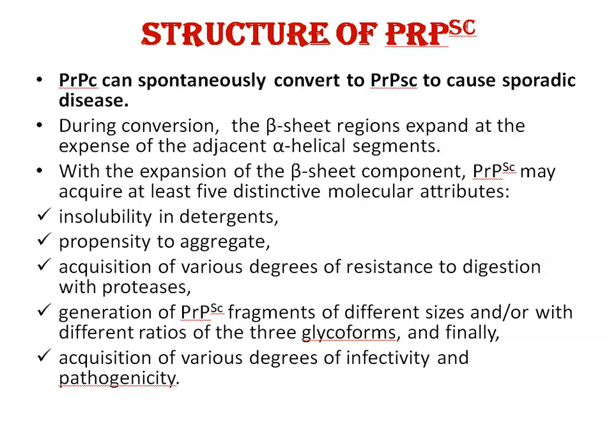Now, the structure of the disease-causing form — that is PRPSC. The normal PRPC form can spontaneously convert to the disease-causing PRPSC form. During this conversion, beta sheet regions expand at the expense of the adjacent alpha helical segments. With this expansion, the PRPSC beta sheet component may acquire at least five distinct molecular attributes: number one, insolubility in detergents; second, propensity to aggregate; third, acquisition of various degrees of resistance to digestion with protease enzymes; fourth, generation of PRPSC fragments of different sizes; and fifth, acquisition of various degrees of infectivity and pathogenicity.